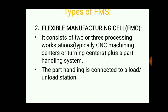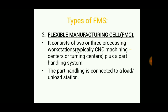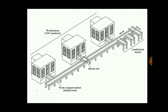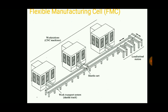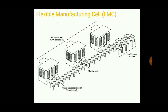The second type is the Flexible Manufacturing Cell. It consists of two or three processing workstations — that is, CNC machines — and a part handling system connected to a load and unload station. The parts are made or processed in these CNC machines. The part can be inserted and removed from the CNC machine via the part handling system, and a load or unload station is also present in this type.